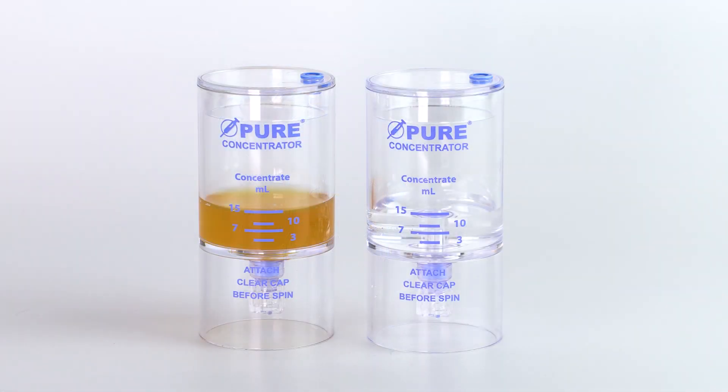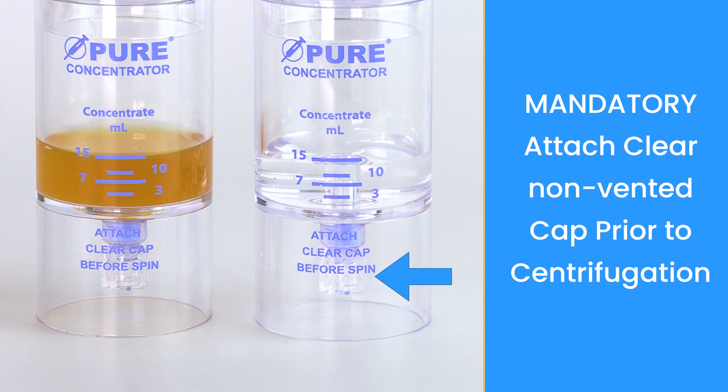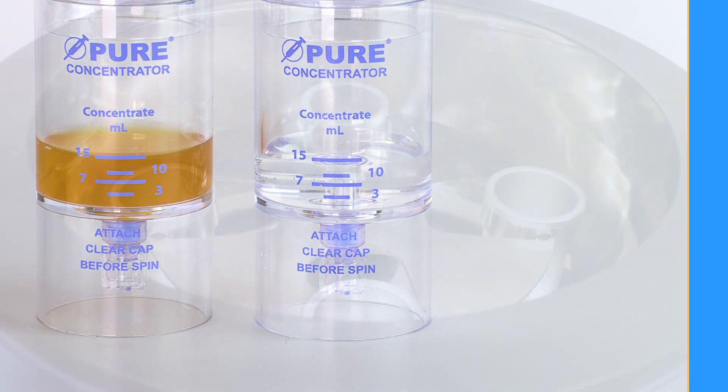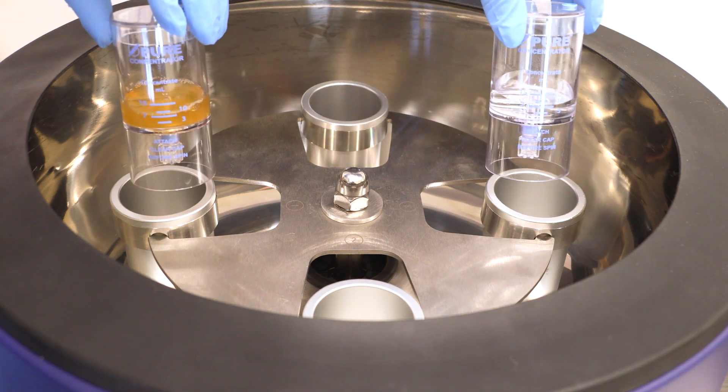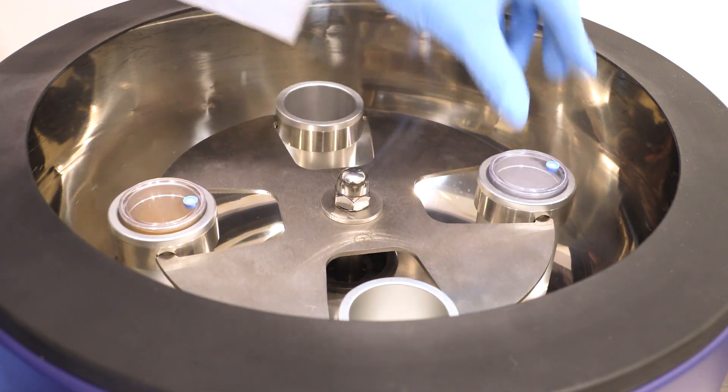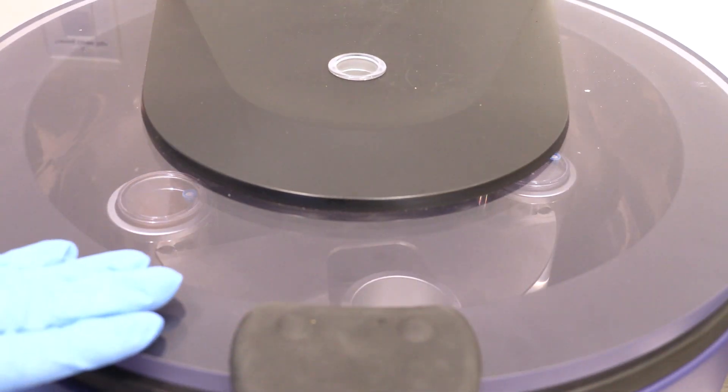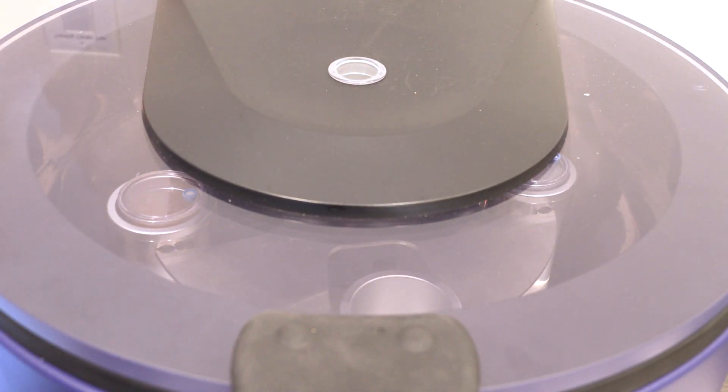Counterbalance with equal volume. Be sure to place the clear non-vented cap to the bottom port of the counterbalance device as well. And place back into the centrifuge rotor at opposite ends. Follow the protocol settings provided in the Pure 2 IFU insert. Close the centrifuge lid and press start.